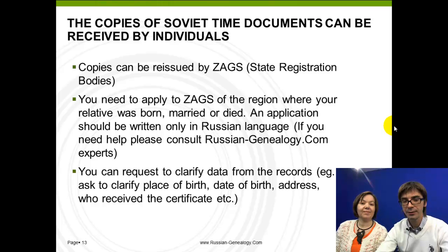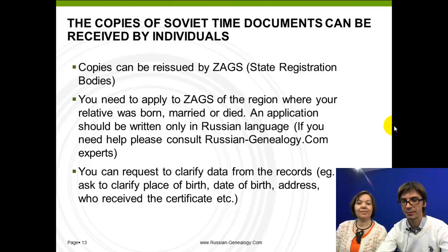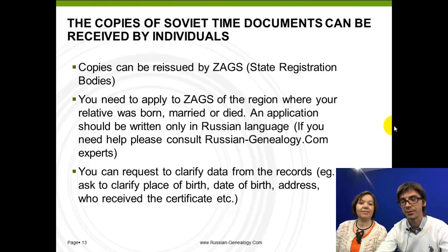You can also request to clarify specific data from the records rather than getting a full copy. If you know part of the information — for example, a date of birth — you might just need to clarify the place of birth. This is all possible and people are already using it.